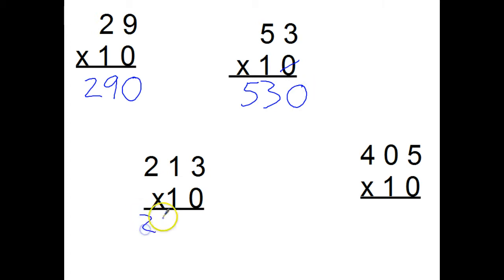213 times 10, write down my 213, add the zero to the end, count back 1, 2, 3 spots for my comma, 2130.